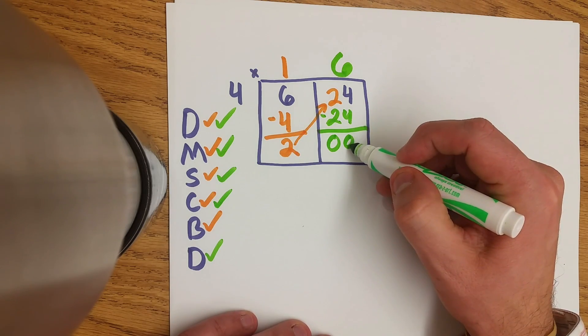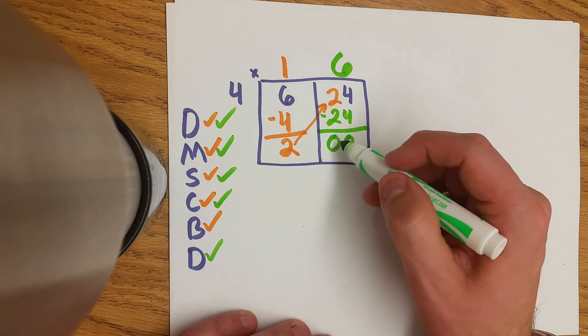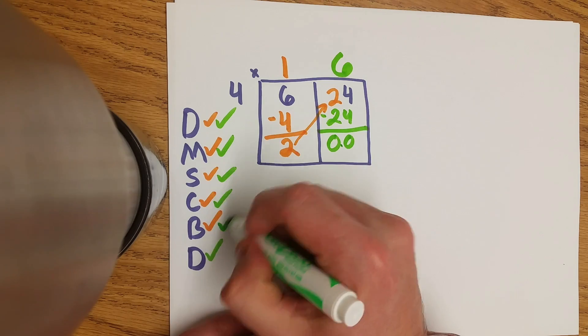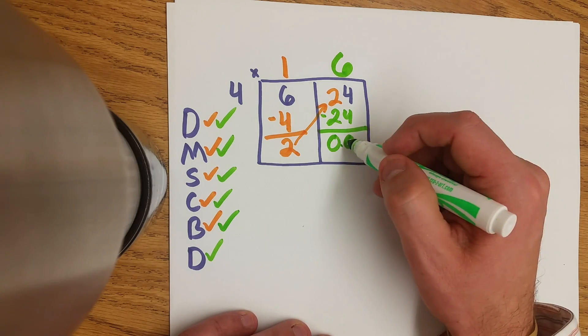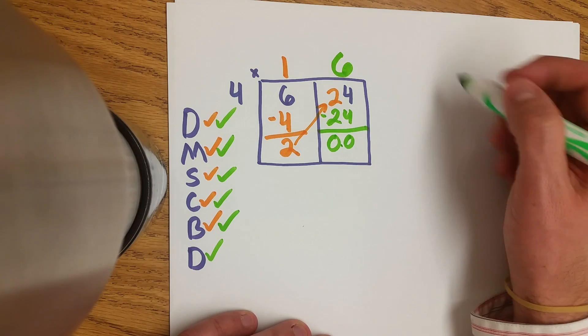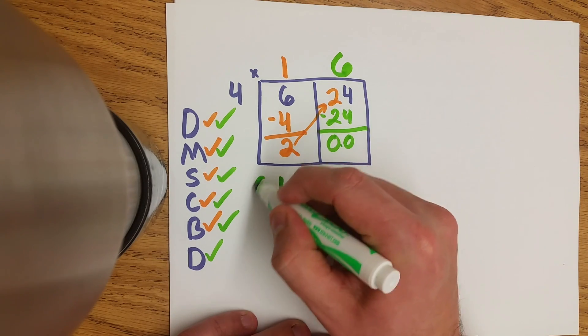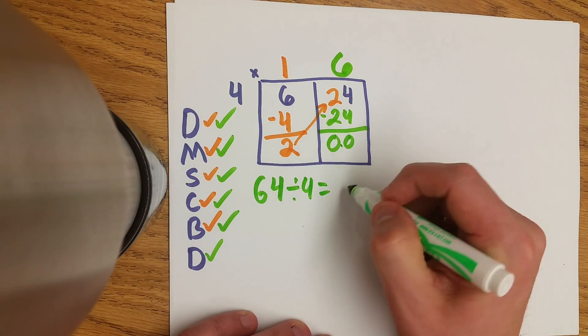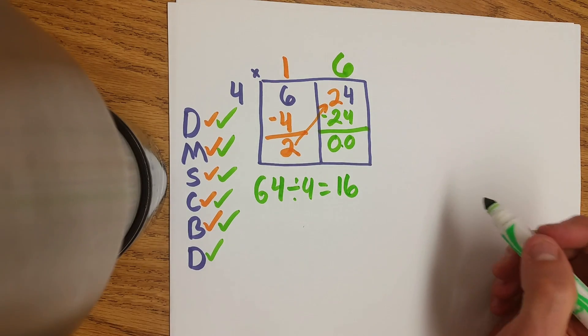Now we check that 0. Is 0 smaller than 4? It is smaller so we can move on. There's nowhere to bring our 0. So now we are done. 64 divided by 4 equals 16.